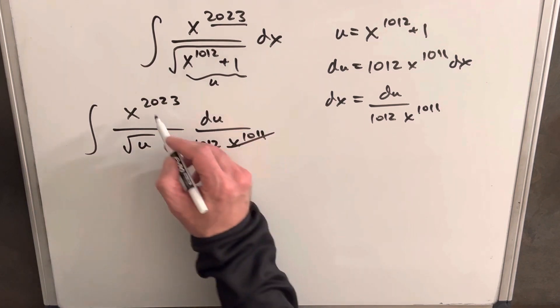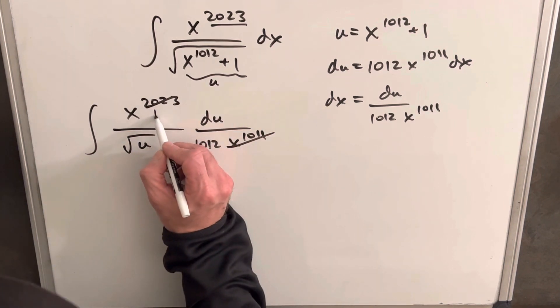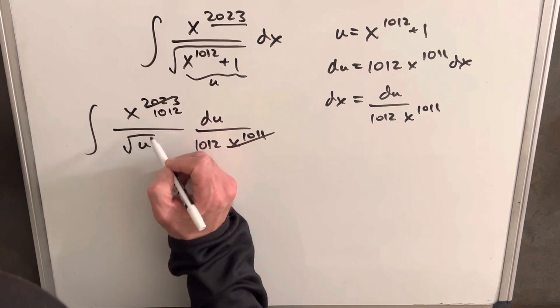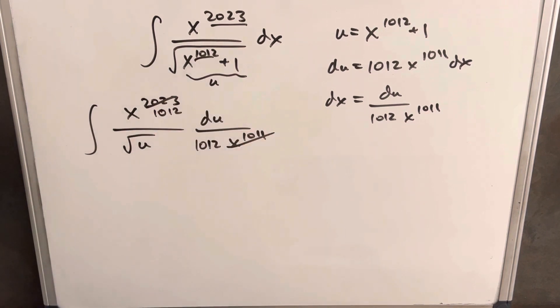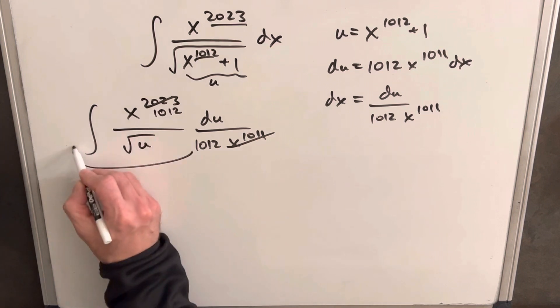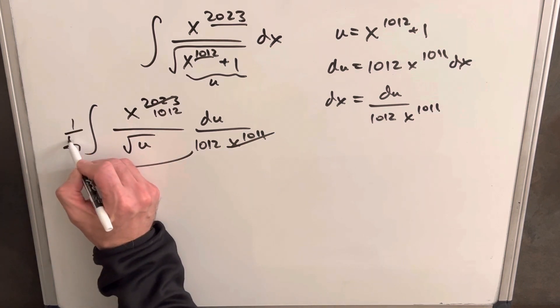I'll cancel here and this is going to become 1012, which is interesting as we had that before. That could help. And then we'll bring this 1012 up front as 1 over 1012.